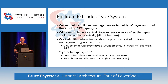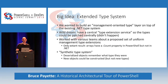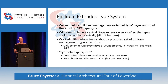Big idea: an extended type system. We wanted to build a management-oriented type system and layer it on top of the existing .NET type system. We had a wild dream of a central type extension system where you'd be able to publish patches to the type system of the running code. It was very cool — it didn't happen. As far as I can remember, there's only one actual result, and that's the fact that arrays have a .count property in PowerShell, and they don't in .NET. So you can always say .count on a collection and get a number back.